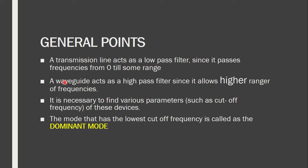When we talk about waveguides, they are capable of transmitting very high frequency values. They start transmitting from a high frequency and extend up to very high frequencies, and hence we say a waveguide acts as a high pass filter. Since the transmission line acts as a low pass filter and the waveguide as a high pass filter, we need to know certain parameters such as the cutoff frequency up to which the components are capable of transmitting.